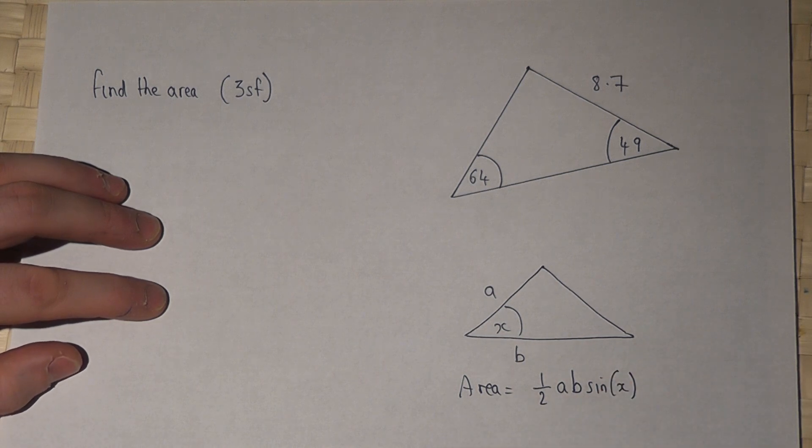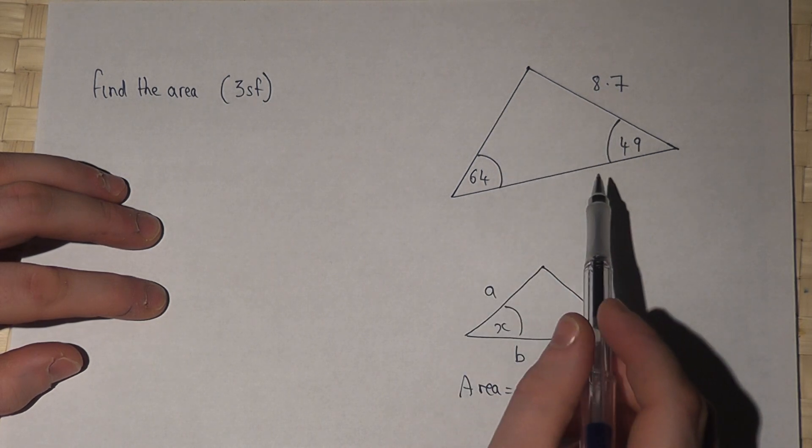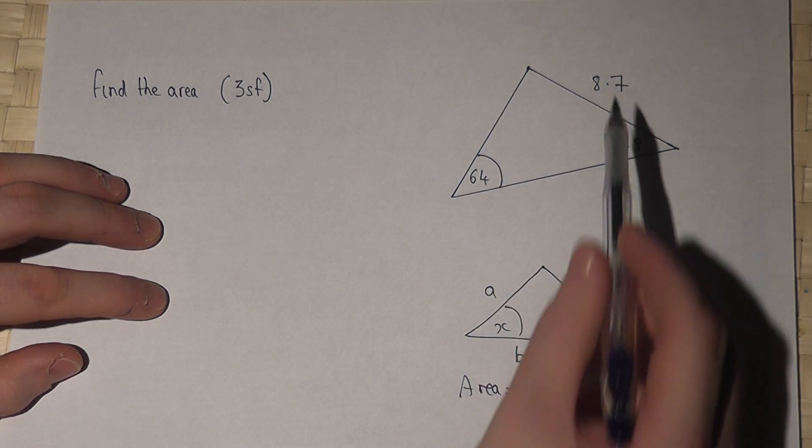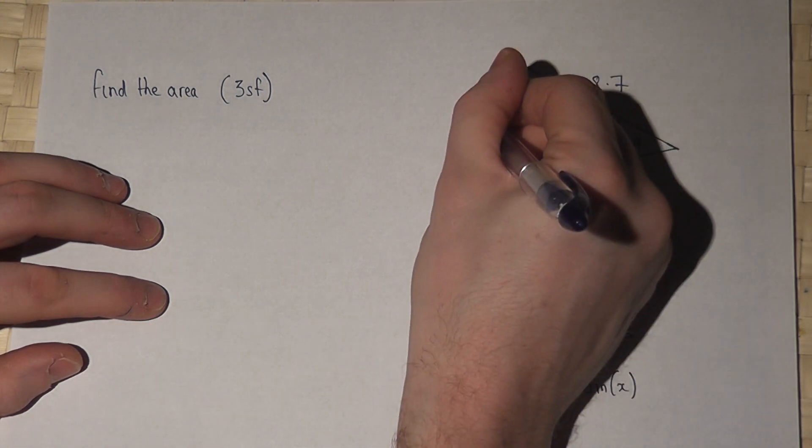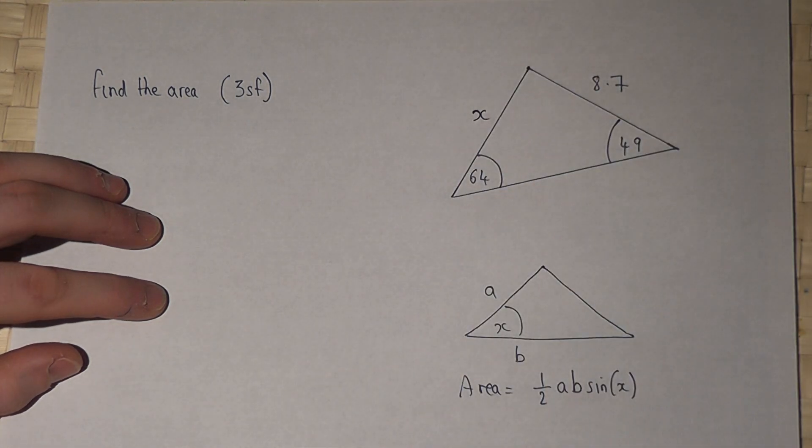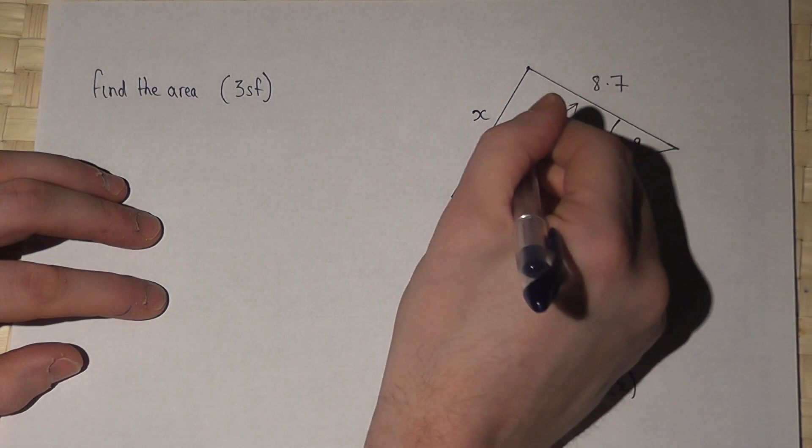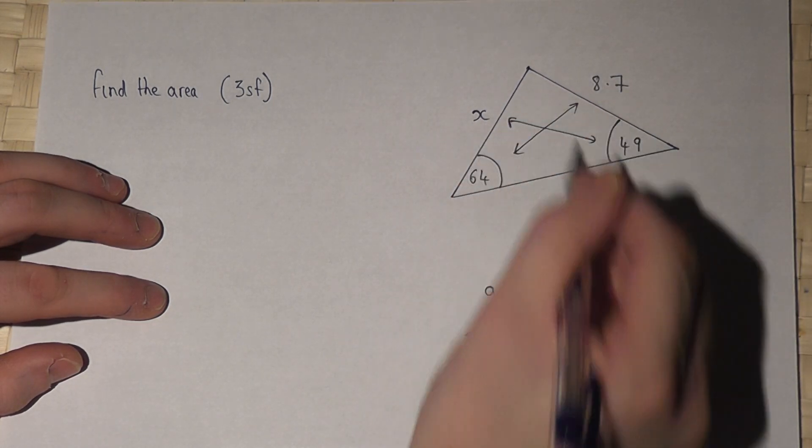So I need to know somehow two sides and an enclosed angle, and I just know one side at the moment. However, if I call this side here X, then I can use the sine rule to find that missing side, because I know pairs of opposite sides and angles.